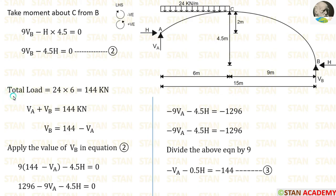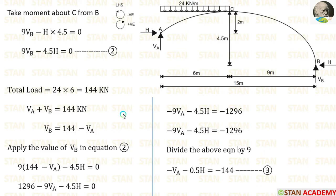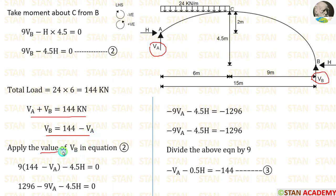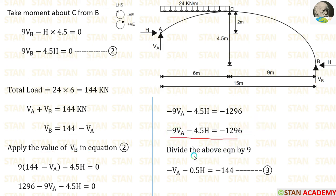The total load on the arch is the UDL of 24 kN/m over 6 m, giving 144 kN. Since VA + VB = 144, we get VB = 144 − VA. Substituting into Equation 2 and dividing by 9 gives Equation 3.